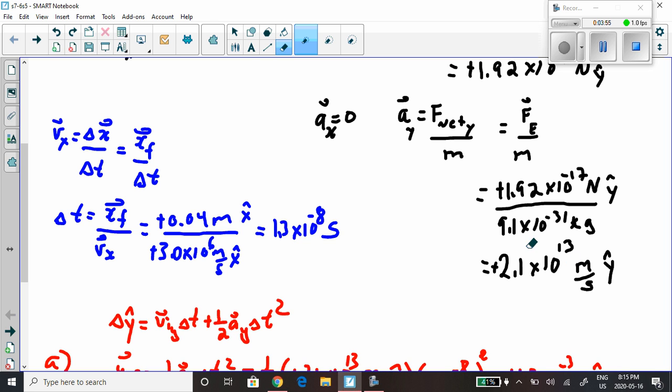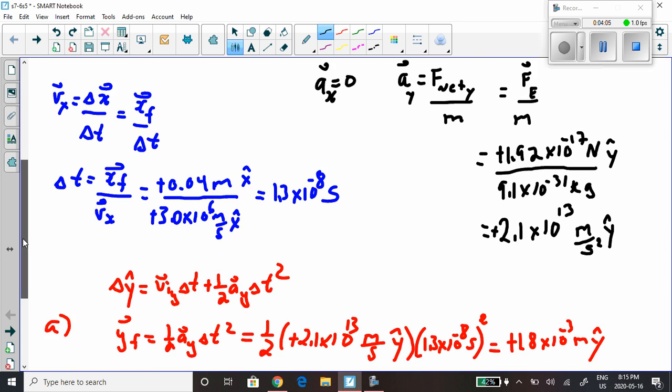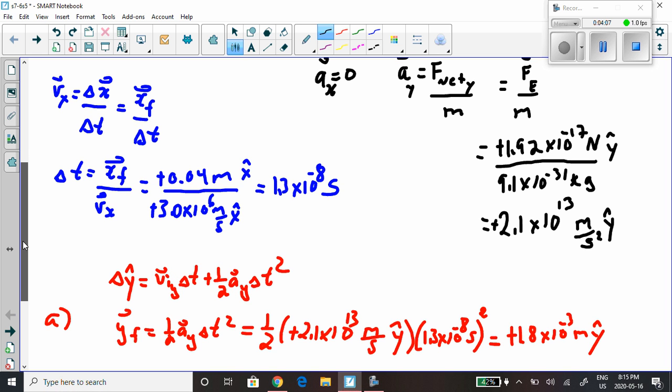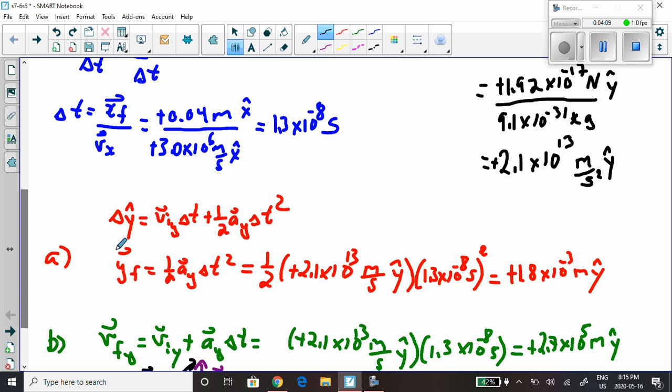We're going to use the time that applies also to the y component, and we're going to use the y component acceleration. Oopsie, did you see the mistake I made there? This is acceleration, I better put a squared there. And I'm going to use that to find all of the questions a, b, and c that they were asked. Now the first question they asked is what's its deflection? How high up did it move from its initial y position, which was zero, by the time it got to the end of the plate? So they want us to calculate delta y.